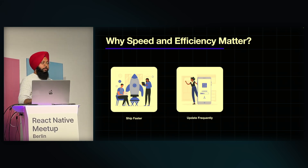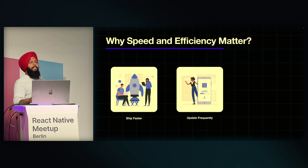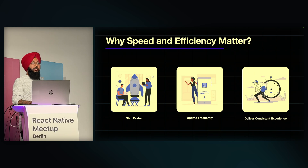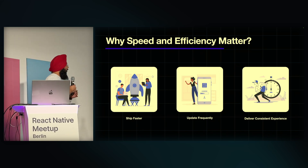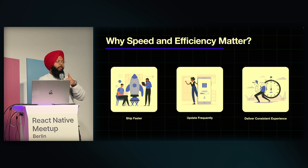The second factor is frequency — how frequently can we update our builds? We've seen EAS builds and different procedures for React Native, but it still takes time. In some ways, we can help make releases more frequent. Next is consistent experience. These days there are multiple frameworks and libraries, and we always struggle to adapt them together and make a consistent experience across all platforms — web, iOS, and Android.